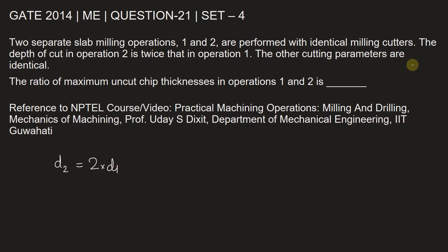Other cutting parameters are given as identical. While using the formula, we'll have to put other cutting parameters identical. We now have to find out the maximum uncut chip thicknesses ratio.